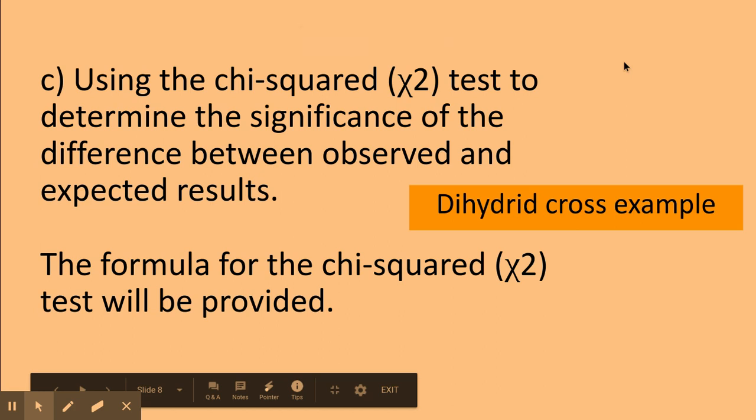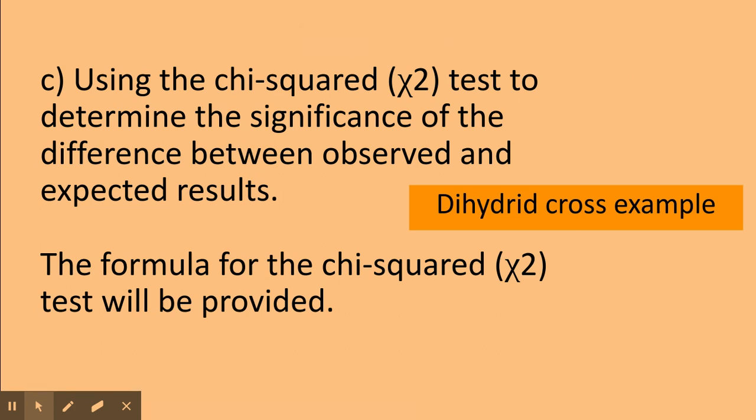Welcome biologists. In this session we're going to look at chi-squared again, this time looking at an example of a dihybrid cross. In the first video on chi-squared we looked at a monohybrid cross.